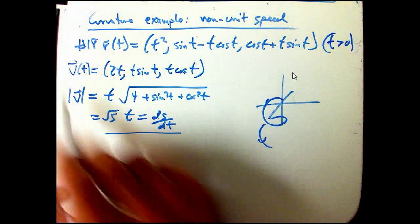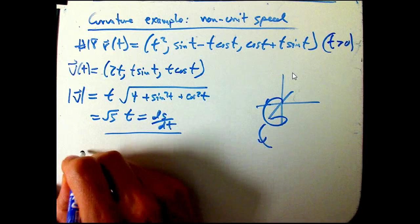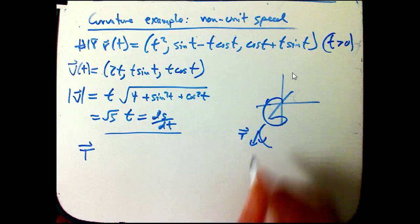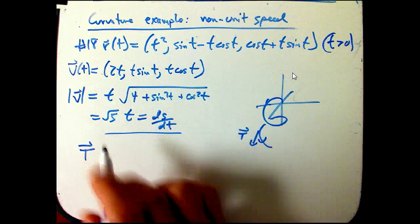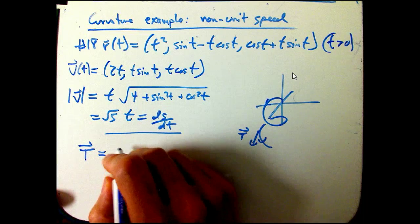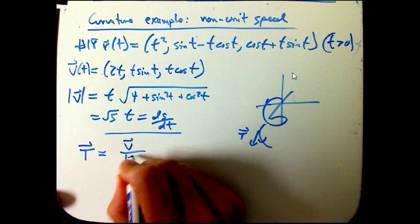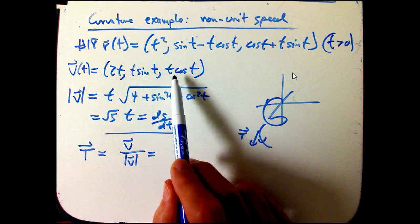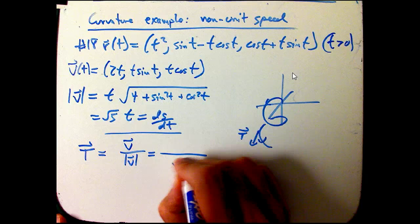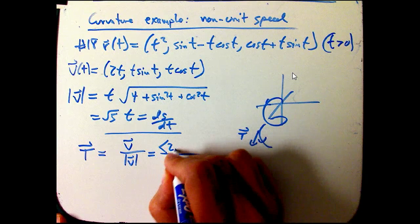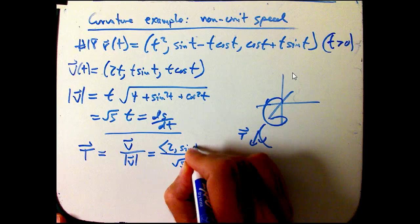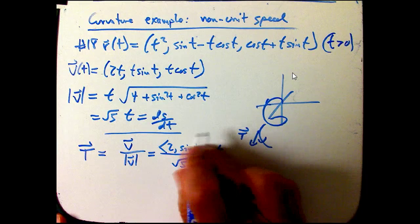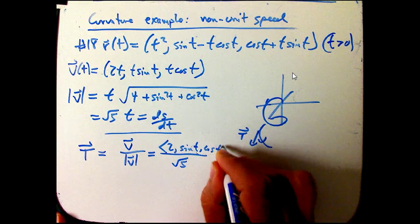Now, one of the big distinctions between the non-unit speed and the unit speed case is we always want the unit tangent vector T and how it's changing. We can't just say that's the same as v anymore. The unit tangent vector T(t) is the velocity over the speed. That's actually not bad because it just cancels out the t's, and we get (1/√5) times the vector ⟨2, sin t, cos t⟩.